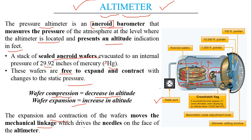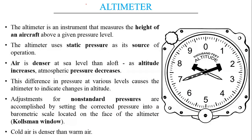The expansion and contraction of the wafers moves mechanical linkages, which drive the needles on the instrument face where the altitude indications are displayed. The altimeter uses static pressure from the static port. We should also note that air is denser at sea level than aloft — as altitude increases, atmospheric pressure decreases, and this difference in pressure at various levels causes the altimeter to indicate changes in altitude.